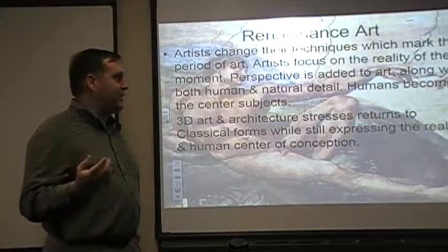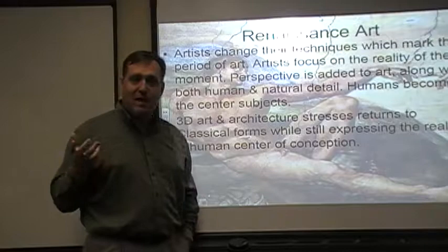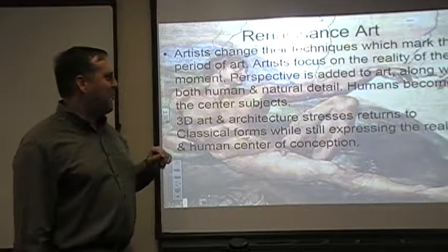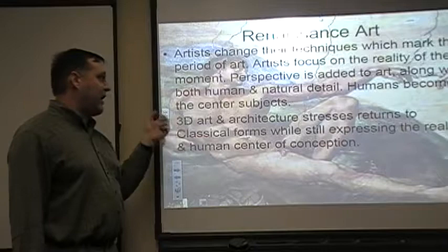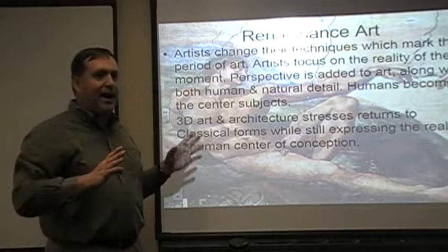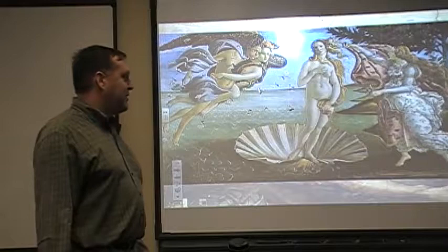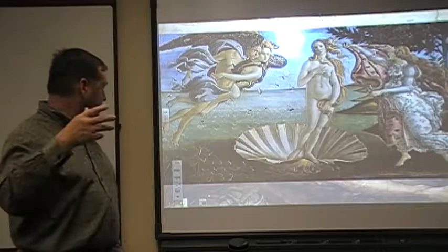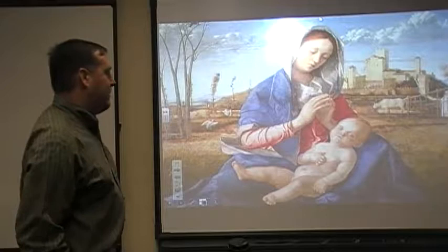The artistic techniques of the Renaissance are really important. Artists focused on the reality of the moment, trying to show things as they are. Perspective is an important change — contrast those medieval drawings where people look as tall as castles. You also have important elements of humanity and natural detail, with human beings as the center of subjects. In 3D art and architecture, both stress a return to classical forms — Greco-Roman-looking columns and frontispieces — while also expressing the reality and human center. The Birth of Venus is a good example: the human form takes up an incredibly large portion of the frame, clearly the center of the concept.